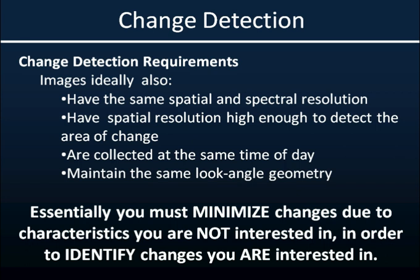Ideally, to get an accurate assessment of change, you would also like the two images to have the same spatial and spectral resolution. When comparing before-and-after images from different sensors that don't match up in pixel size or in what spectra are used in the classification, you're going to introduce potential differences that have nothing to do with actual change. You also have to make sure you have a high enough spatial resolution to detect what you're looking for — if you're looking for increases in development but you have a 250-meter MODIS image, are you really going to be able to pick up new housing lots, or only huge apartment complexes?